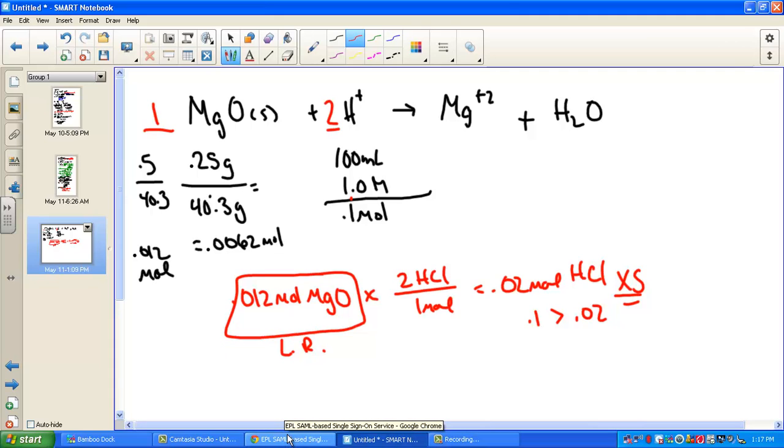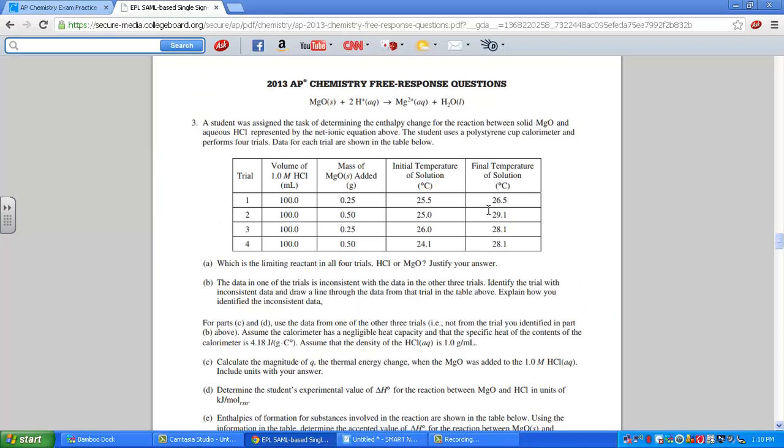To examine the data table to find which one is inconsistent, we're going to find which one has delta Ts that are inconsistent with the others. From 0.25 grams, comparing trial 1 to 3, let's see what we're finding for a delta T. Trial 1's delta T would be 26.5 minus 25.5, that's 1 degree. What kind of data is showing here? The 28.1 minus 26 is 2.1. So right away I'm knowing trial 1 and trial 3 are giving me inconsistent data. Same amount of MgO being used, but clearly a big difference. Trial 1 is giving us 1 degree change. Trial 3 is giving us a 2.1 degree change. So it's one of those two.